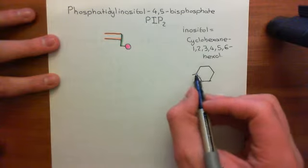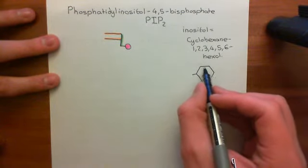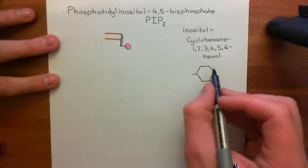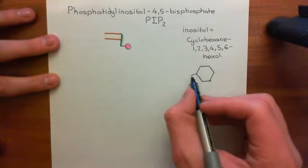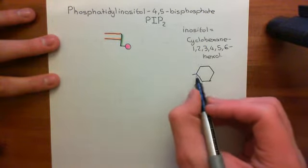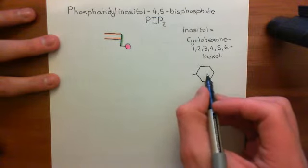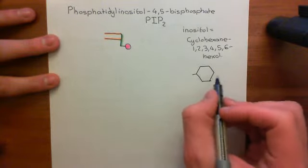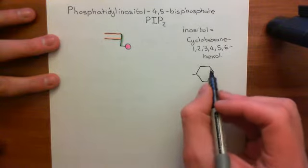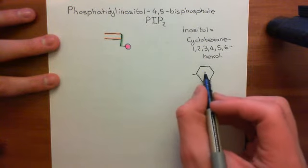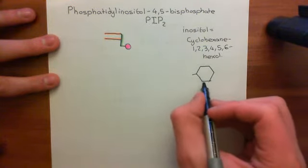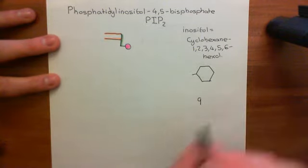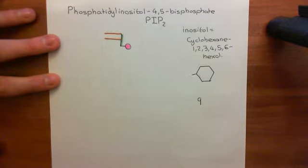There are going to be a huge number of different optical isomers of inositol. You could have all of the alcohol groups coming out of the page towards us, or you could have three on one side and three on the other. You would not be able to turn one into the other without breaking bonds. In fact, there are actually nine optical isomers, but only one is found within cells to any great extent.